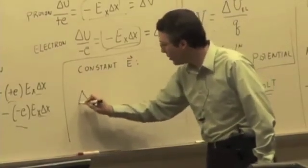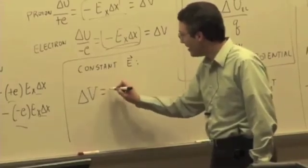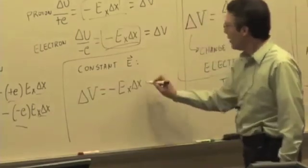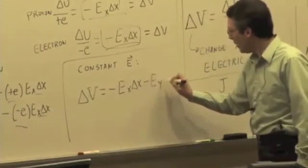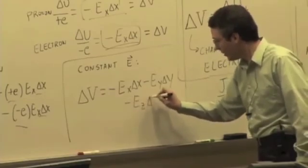We can relate the change in energy per unit charge, the change in electric potential, to the electric field. It's equal to negative E sub X delta X minus E sub Y delta Y minus E sub Z delta Z.